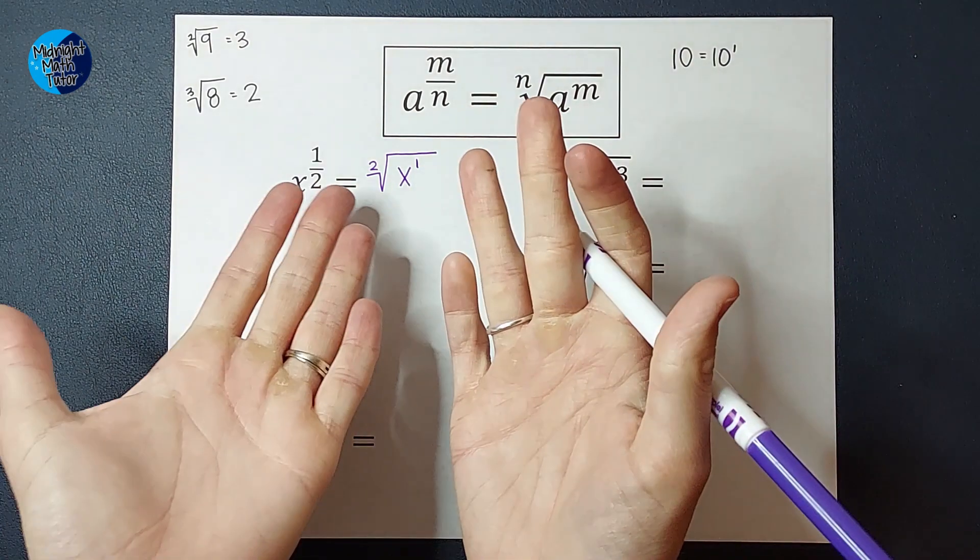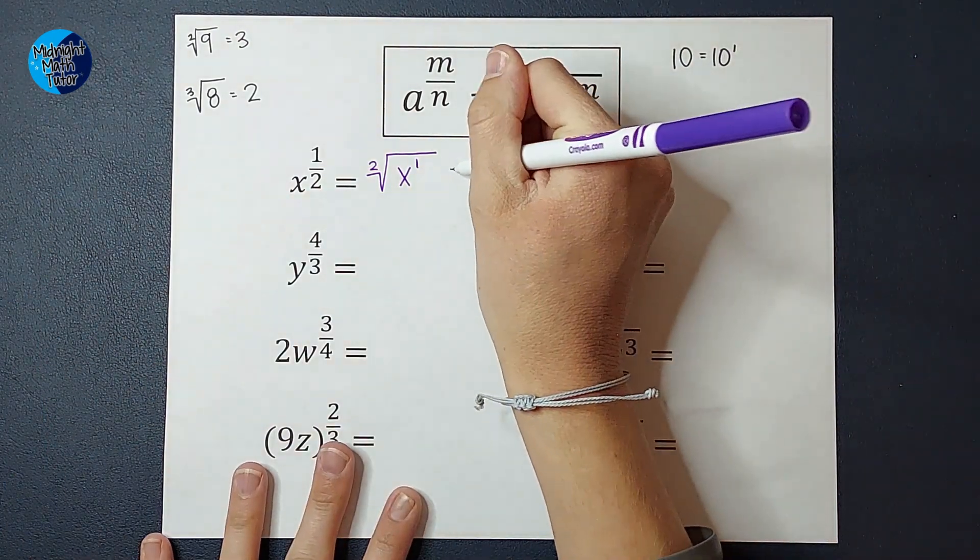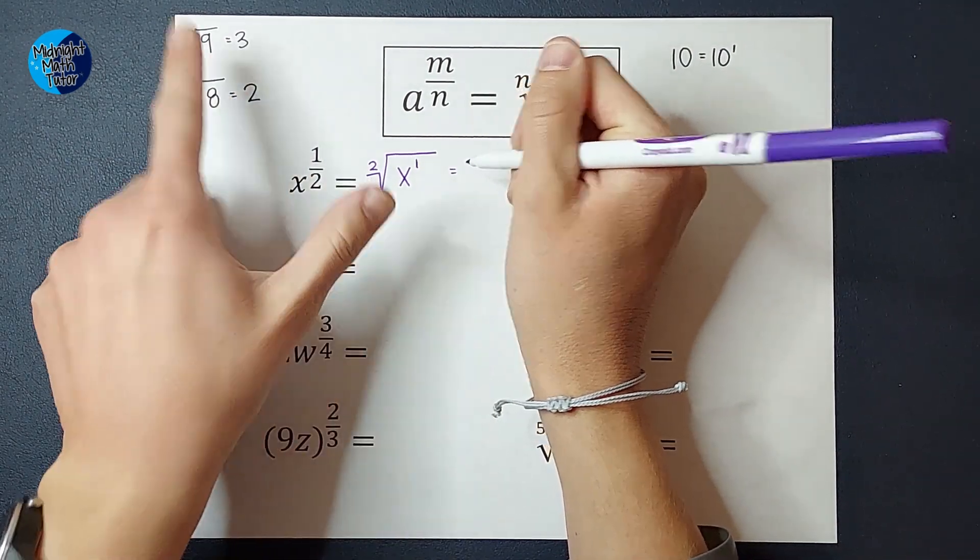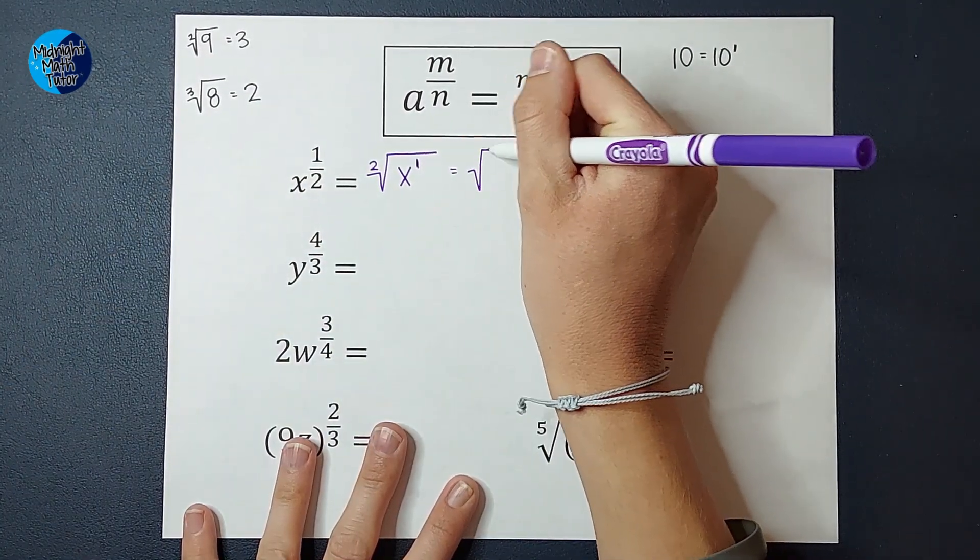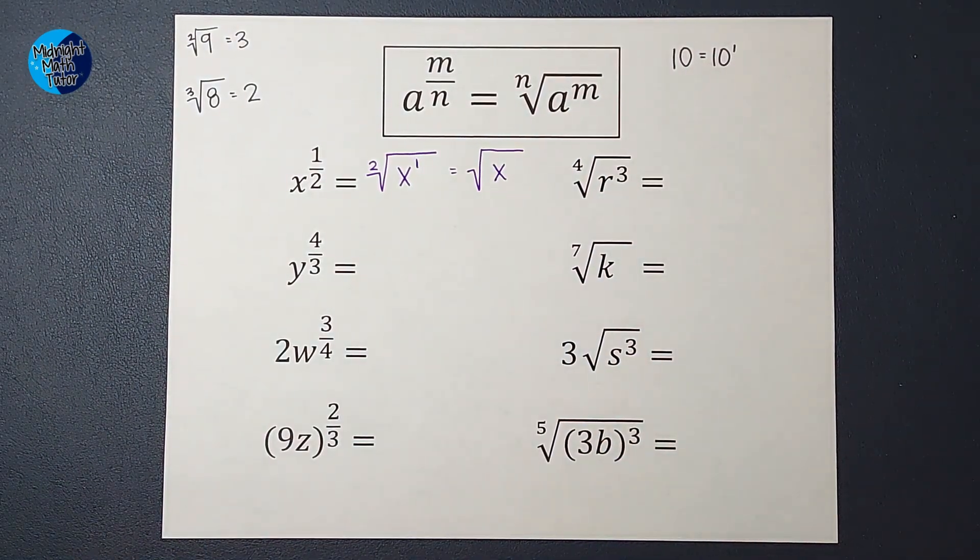So that is my answer, but to write it in a way we're more used to seeing it, I don't need to write that 2. I can just have it be the square root of x because I don't have to write to the first power. So x to the 1 half is the same as the square root of x.